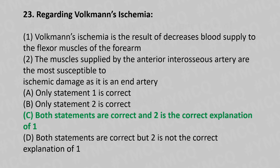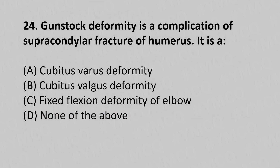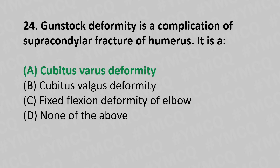Moving to our 24th question. Gunstock deformity is a complication of supracondylar fracture of the humerus. It is: Option A, cubitus varus deformity. Option B, cubitus valgus deformity. Option C, fixed flexion deformity of the elbow. Option D, none of the above. And the answer is Option A, cubitus varus deformity.